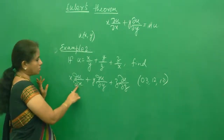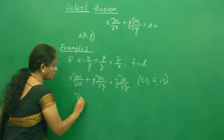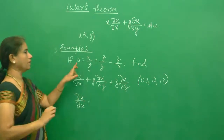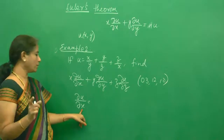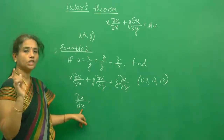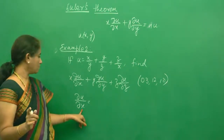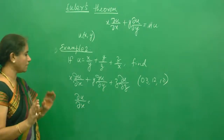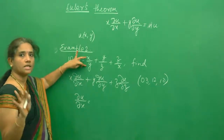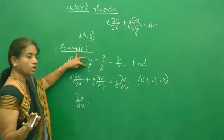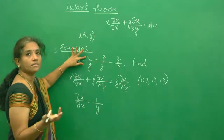Let us find ∂u/∂x, ∂u/∂y, and ∂u/∂z. What is ∂u/∂x? U is given as x/y plus y/z plus z/x. I am going to differentiate with respect to x. In partial derivatives, when we are differentiating with respect to x, other variables are taken as constants. Just look at x/y — here x is a variable, y is a constant, so x derivative is 1 and y stays as it is.